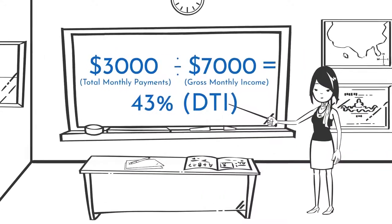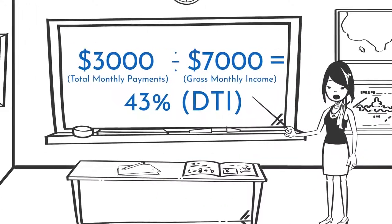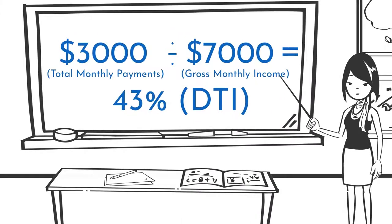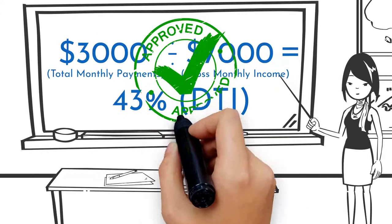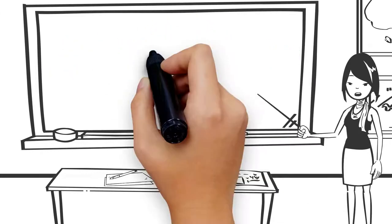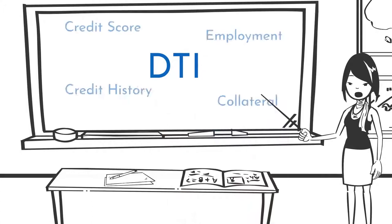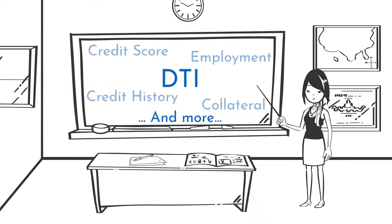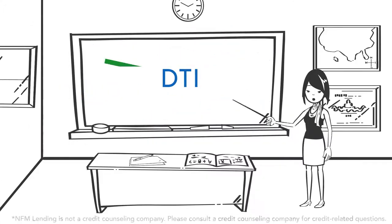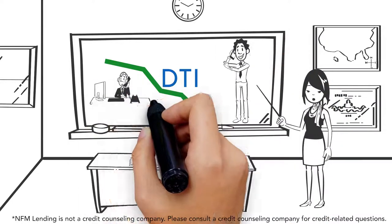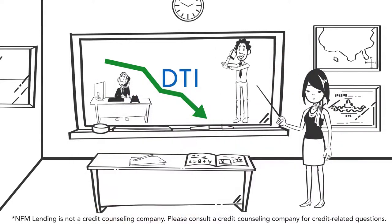The lower your debt-to-income ratio, the more likely it is that you will be able to make mortgage payments and that you will be approved for a loan. DTI is just one factor used to determine your ability to make loan payments. If you need to lower your DTI, ask your loan originator or consult with a credit counseling company.